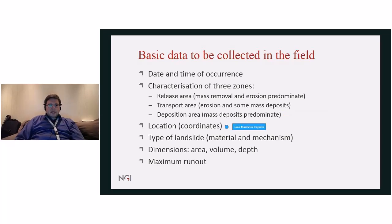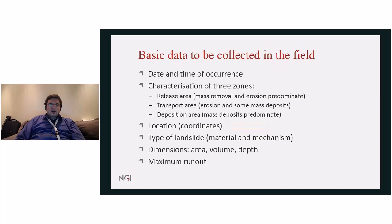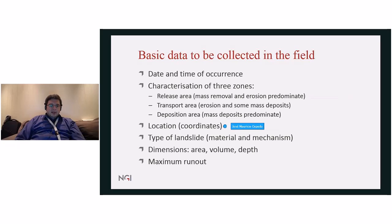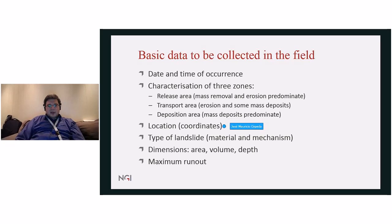It's important to collect data about the location of the landslide, either in the form of coordinates of a point, or now that we have other tools like drone surveying. It's important to have a complete survey that covers all the landslide area, including both the release, the transport, and the deposition area. Using images from a drone, we can reconstruct a DEM, make an ortho correction and georeferencing, and then we have the coordinates for the entire footprint of the landslide.